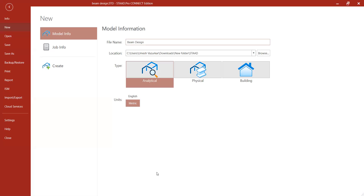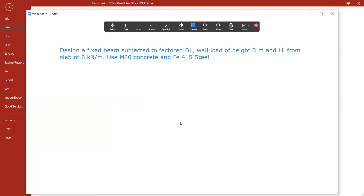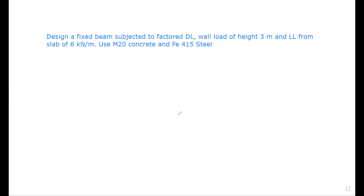Hello everyone. In this video I am going to show you how to design a single beam which is fixed at both ends and subjected to various loads. The example is: design a fixed beam subjected to factored dead load, wall load of height 3 meters, and live load from slab of 6 kN/m. Use M20 concrete and Fe415 steel. We will use STAAD Pro Connect Edition to design this beam.